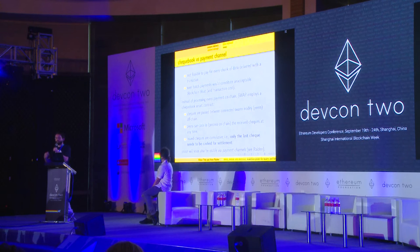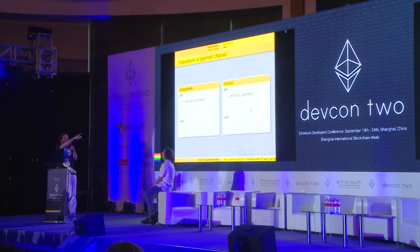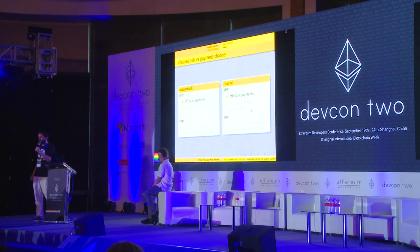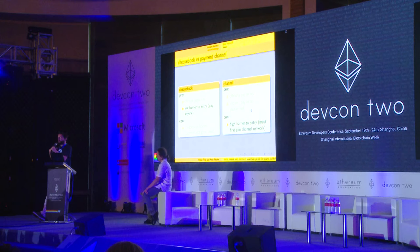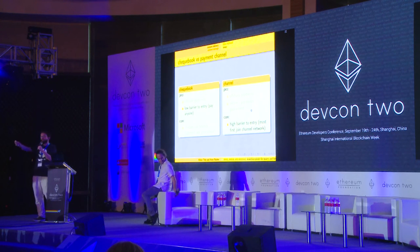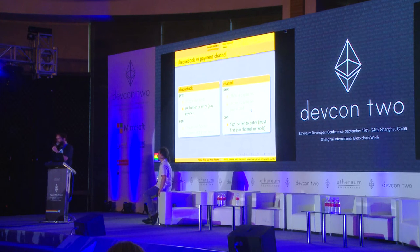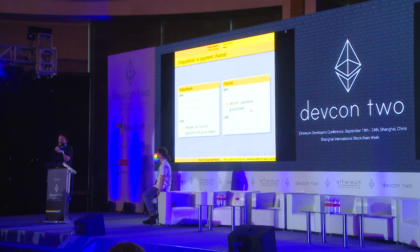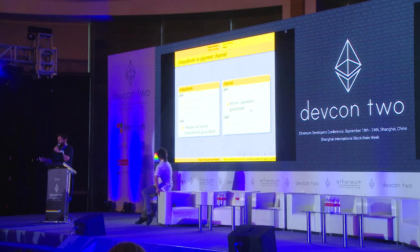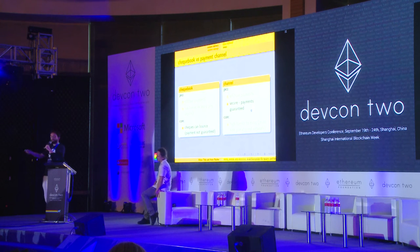Soon we will have payment channels — we're working with the Raiden guys to implement them. Both payment channels and the checkbook move transactions off-chain. The checkbook has a very low barrier to entry: if I have a checkbook contract deployed, I can start paying all of you, and you can send checks to the checkbook contract to cash in. Whereas with payment channels, everyone would have to have joined the payment channel network. The downside is a check can bounce — I can write millions of checks but my checkbook may not have the required balance. But we find it's a good way to get people on board. Payment channels are coming too.